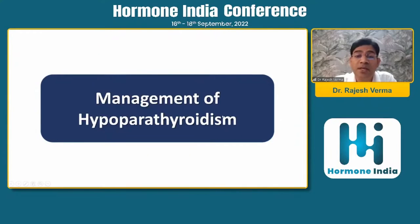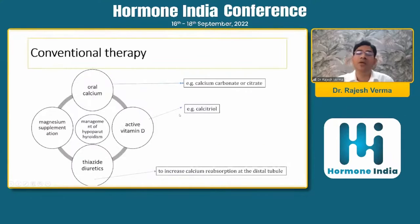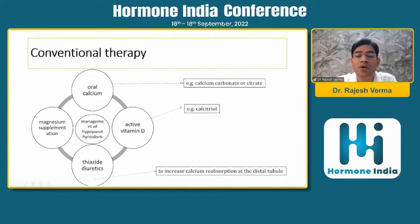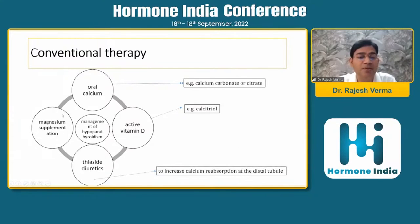The discussion today is management of hypoparathyroidism. The conventional therapies we have been using — and still commonly use — are oral calcium in the form of calcium carbonate or acetate, and the active form of vitamin D in the form of calcitriol. Thiazide diuretics may be added when the patient is not adequately controlled on oral calcium and active vitamin D, or when there is an increased incidence of nephrolithiasis or calcinosis, as they increase reabsorption of calcium at the distal tubules. Magnesium supplementation is used in those with deficiency.